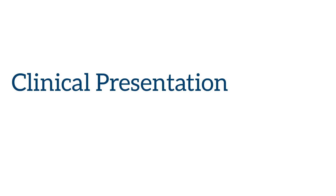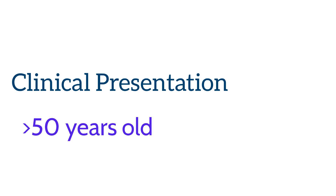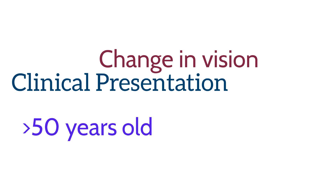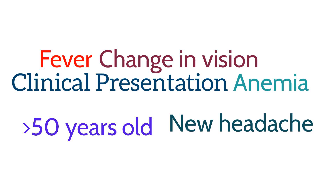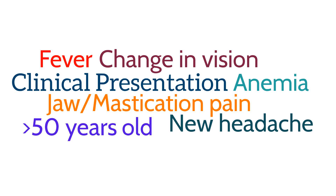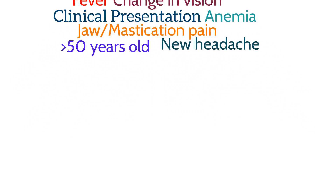Patients typically present who are older than 50 years old with a drastic change in vision, new headache, fever, low blood count (otherwise known as hemoglobin), pain with chewing and jaw movement, and muscle pain. Anyone who is greater than 50 years old with any of these symptoms should be suspected for giant cell arteritis.